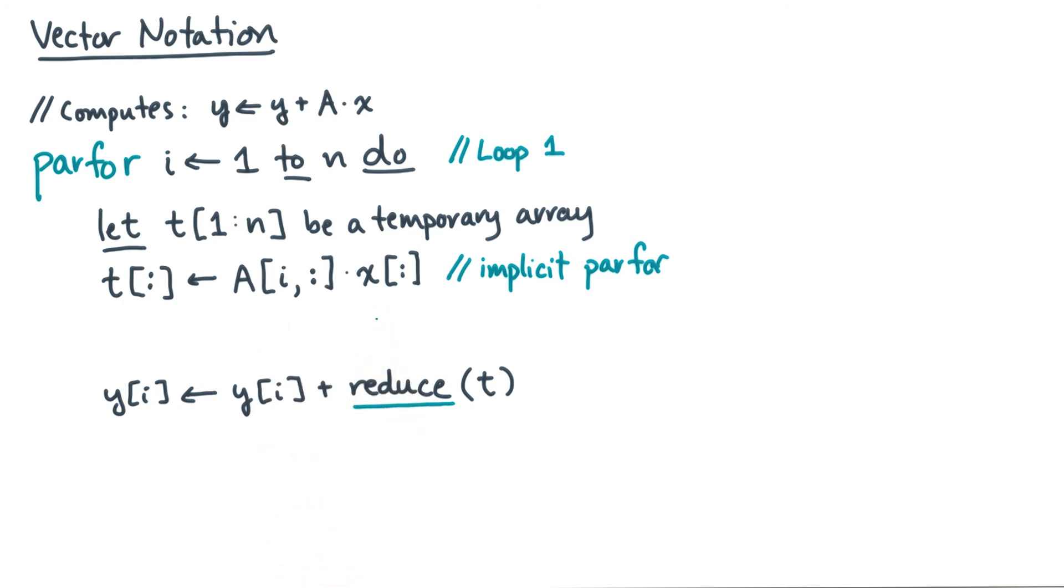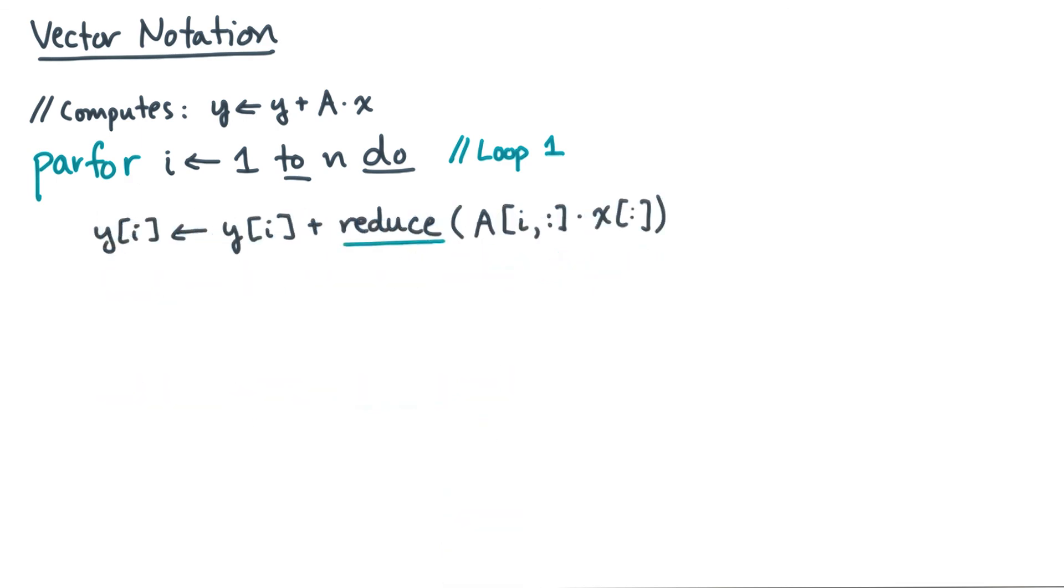Now we'll allow ourselves to use a second simplification, which is to get rid of the temporary array. It's understood that this element-wise product has to produce a temporary intermediate element-wise result, which we then pass to the reduce. So we can combine these into a single statement. Again, the only subtle thing is that this produces a bunch of intermediate values, so that may require a temporary. So if I ask you to analyze storage costs, then you might need to take that into account.